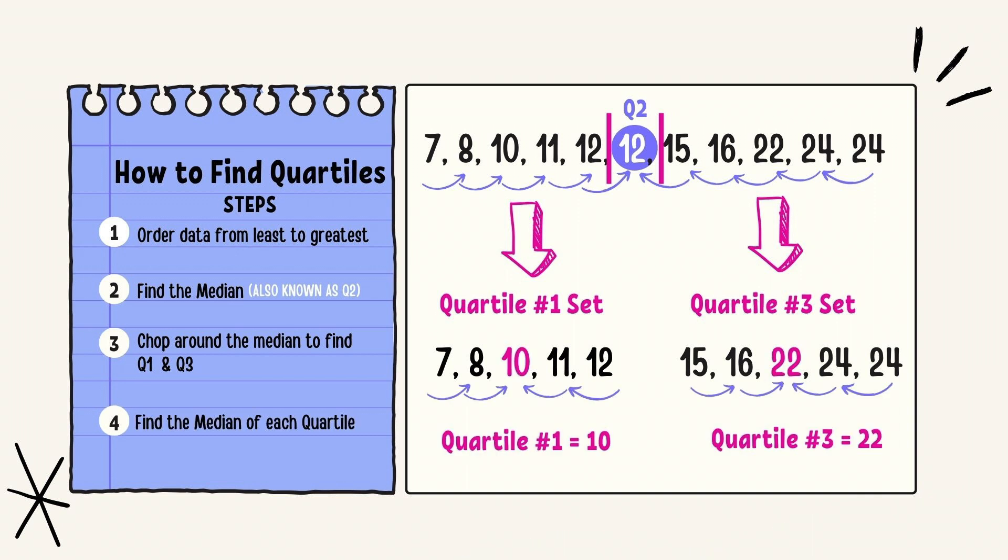From here, you're just going to find the median. The median of quartile 1 is 10. The median of quartile 3 is 22. And that's it.